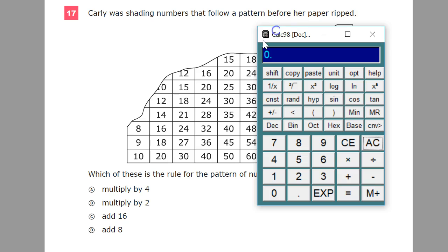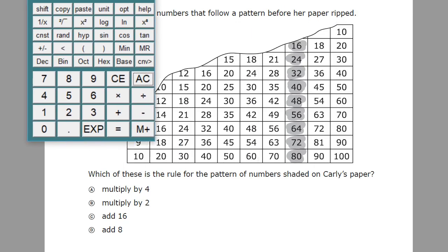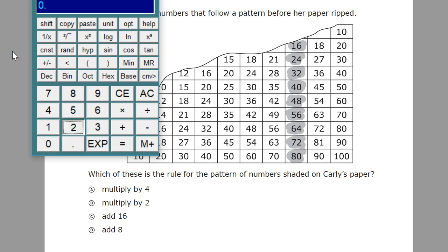So let's take a look at, I'll go 24 to 32. So if I did 24 times 4, well, that's not it, because it's supposed to be 32 and it's 96. No, that's not right. 24 times 2. Okay, 48. No, that's out. Add 16. 24 plus 16. No, that skips over to 40. So we're on the right track. And then 24 plus 8 equals 32.